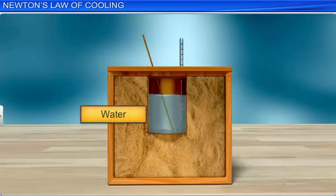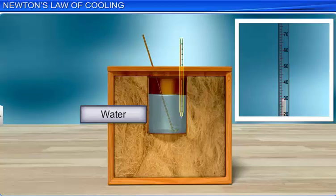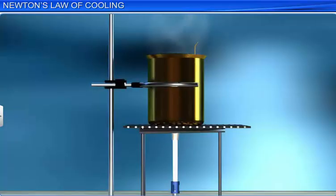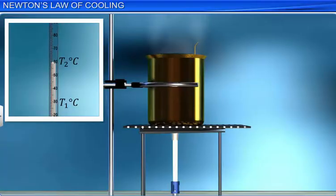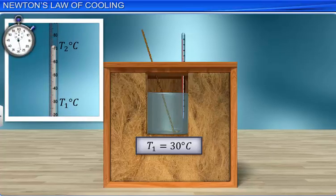Let's take some water at room temperature in a calorimeter and place in it a thermometer. If the temperature of the water is T1 degrees Celsius, then the temperature of the surroundings is also T1 degrees Celsius. Now, let us first heat the water in the calorimeter to raise the temperature to T2 degrees Celsius, then stop heating and allow the water to cool. Start a stop clock and note the temperature T2 of the water at regular intervals, say after every minute.